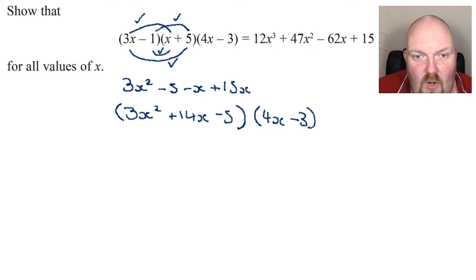Once I've got to this stage, I can then start to multiply everything out. I'm going to do this in a really methodical manner. So first of all, I'm going to multiply each part of the second bracket by this. So 3x squared times 4x is going to be 12x cubed. 3x squared times negative 3 is going to be negative 9x squared.